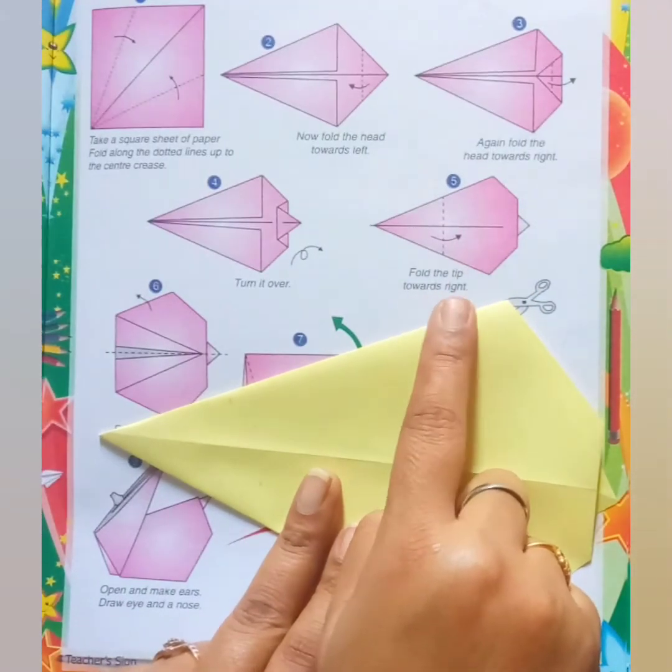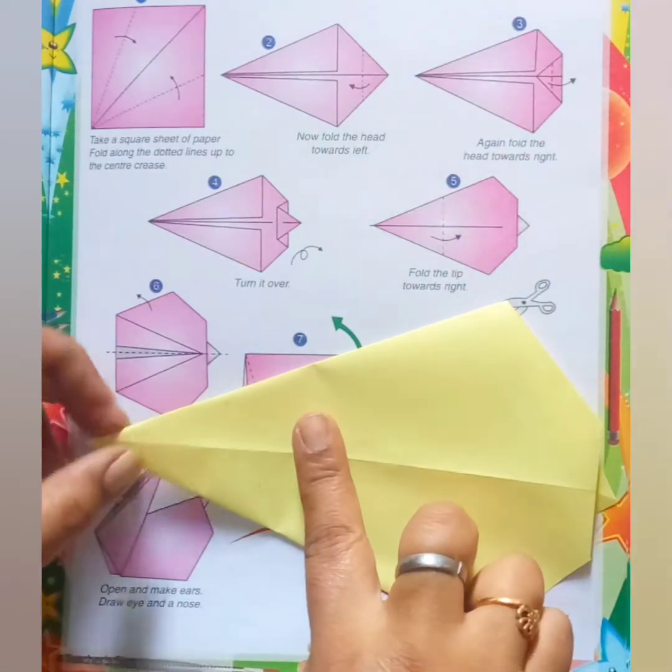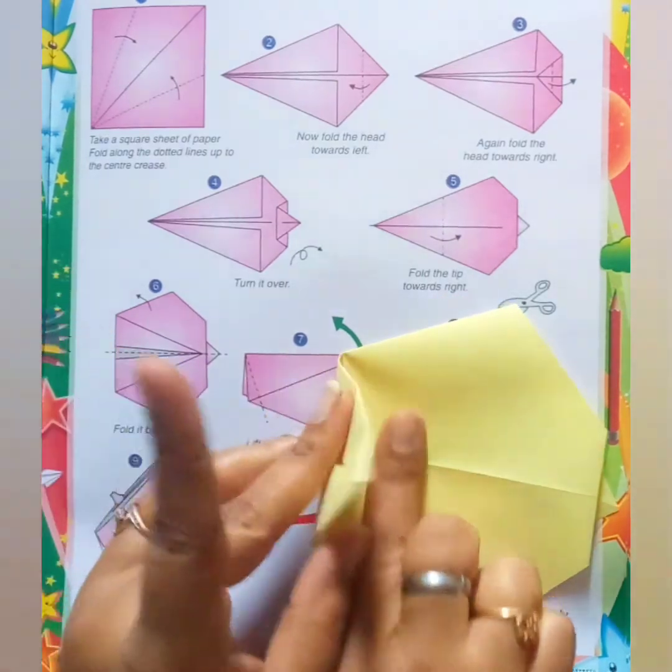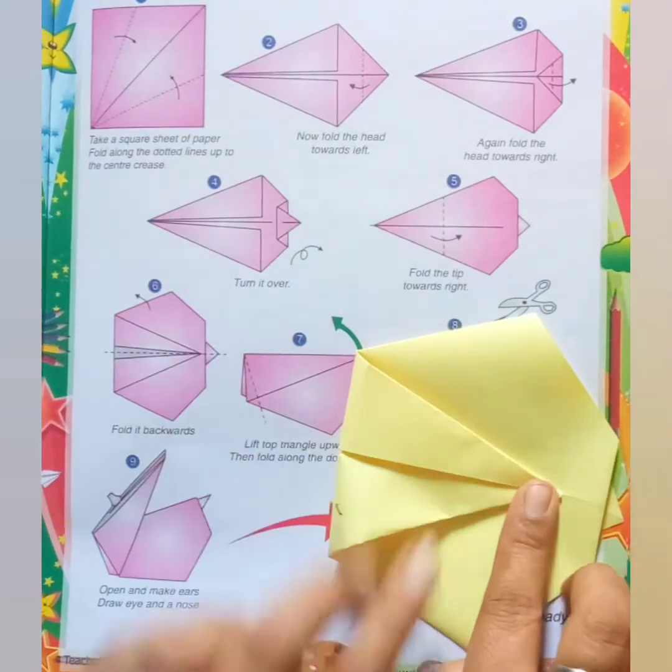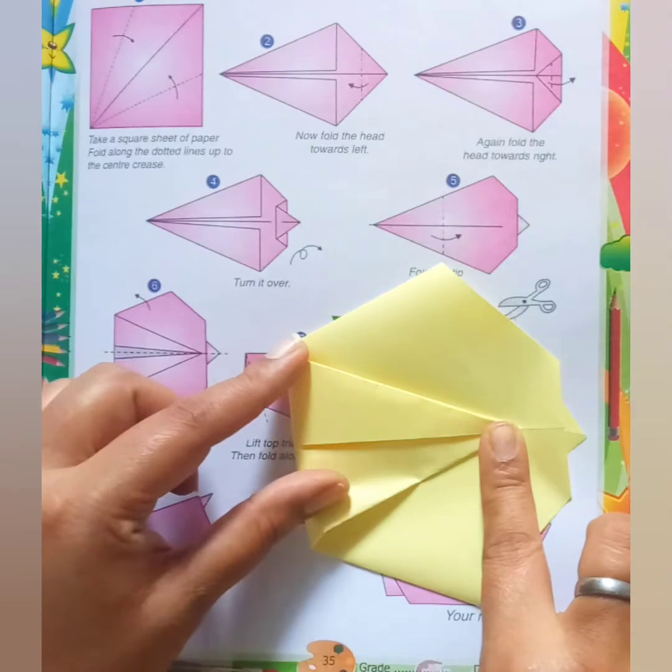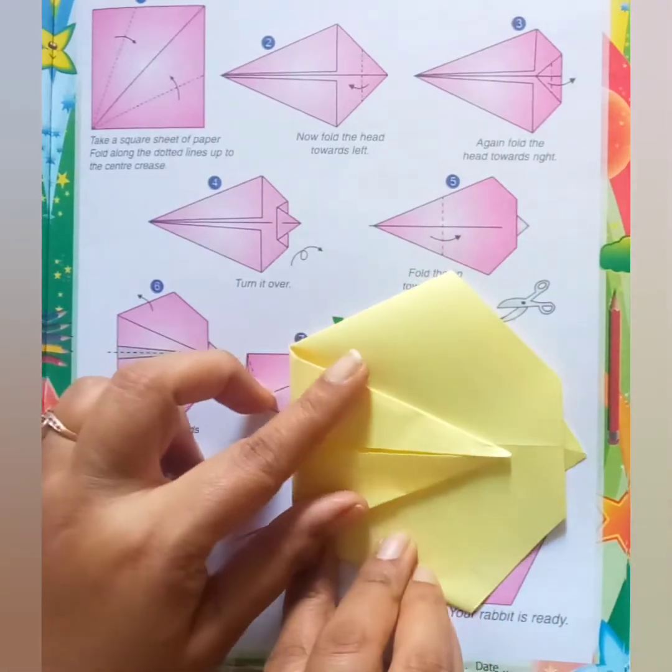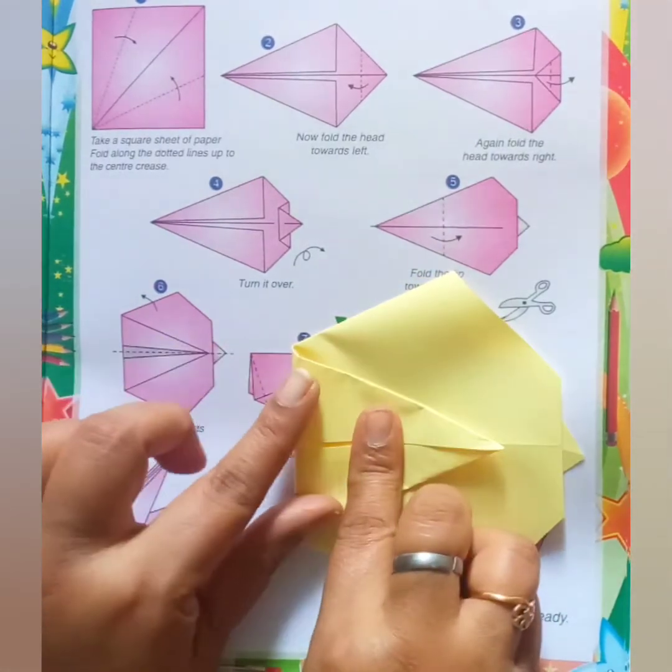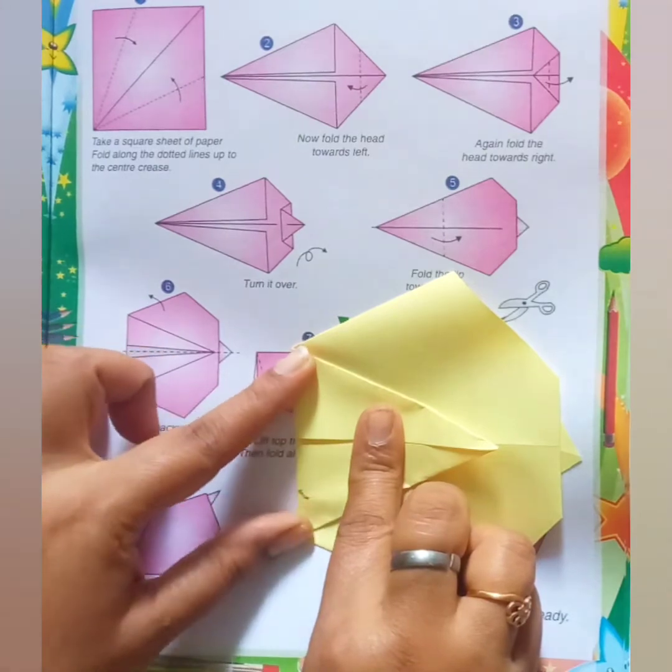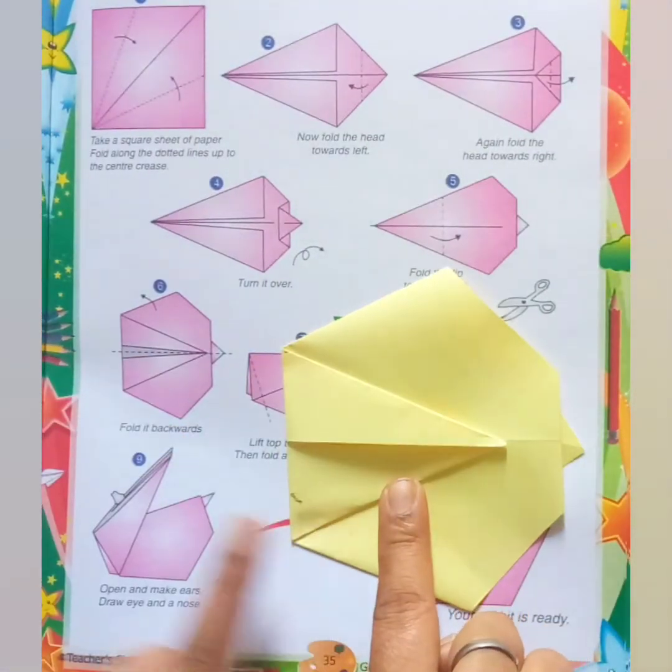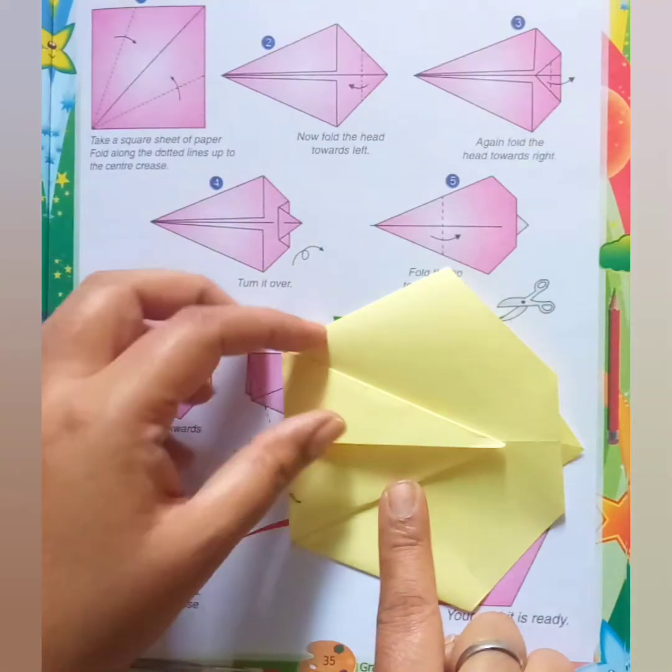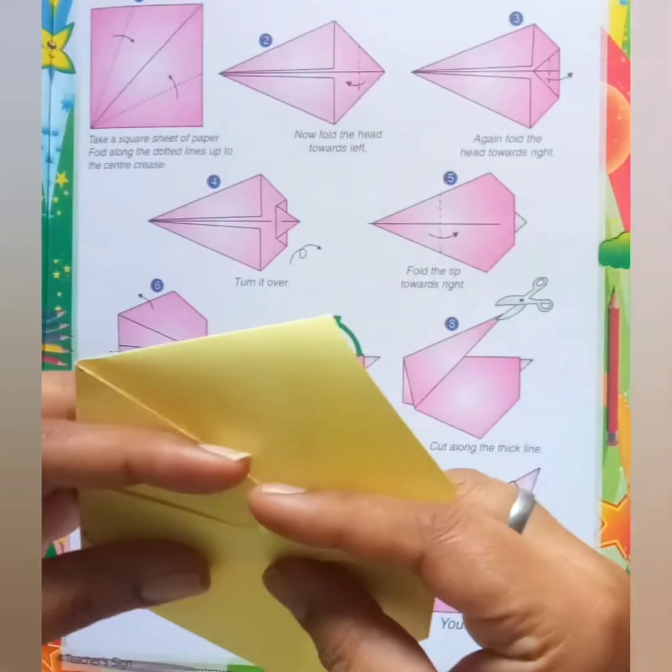Now we will turn the sheet like this. We will be doing step five, fold the tip towards right. We have to fold it like this in a straight line and press it with your finger and thumb like this.